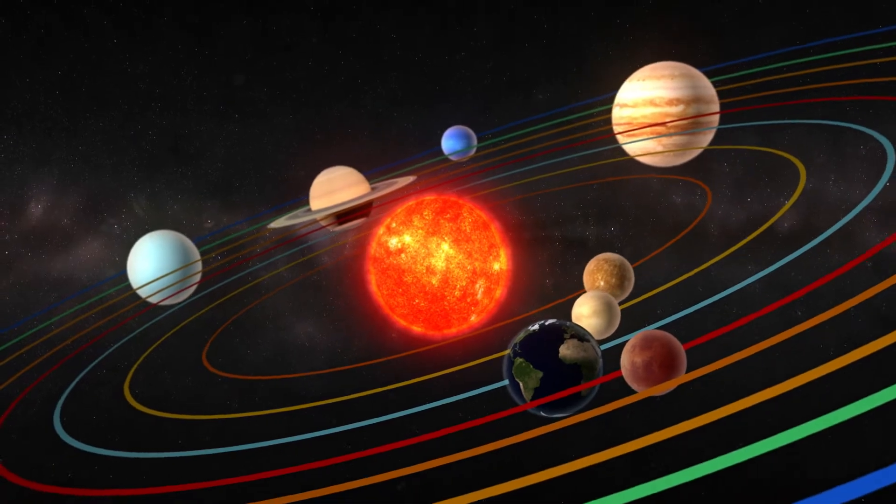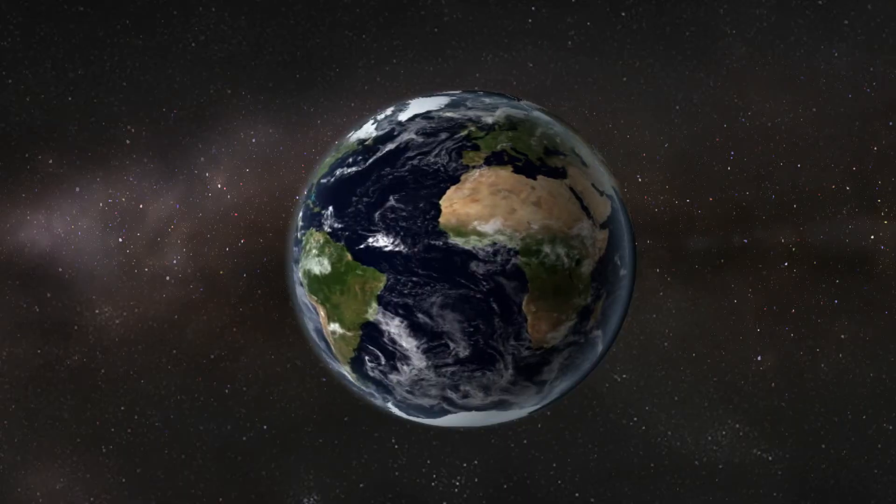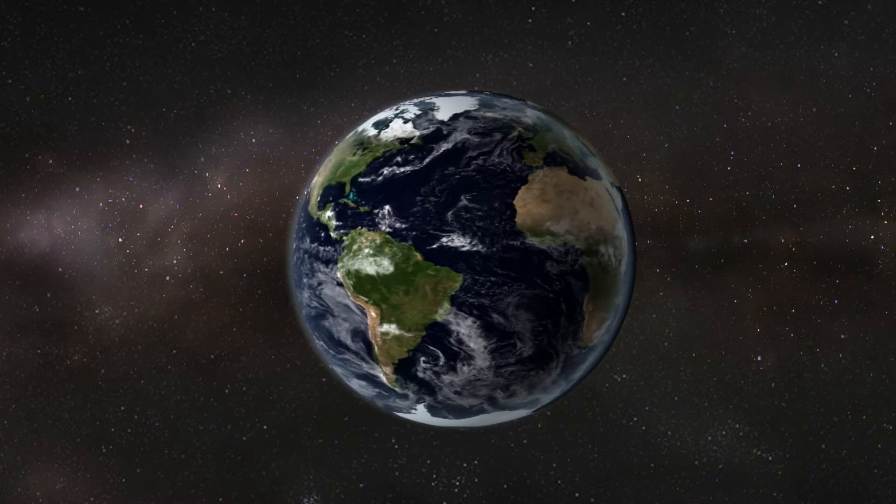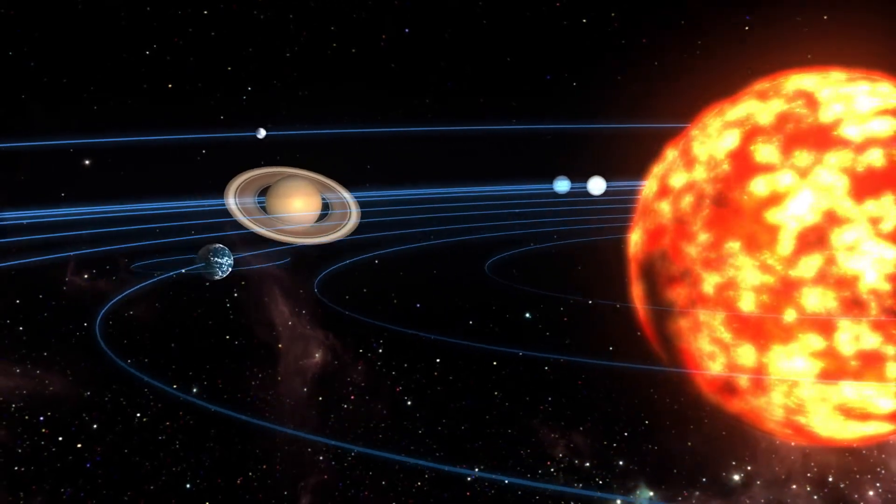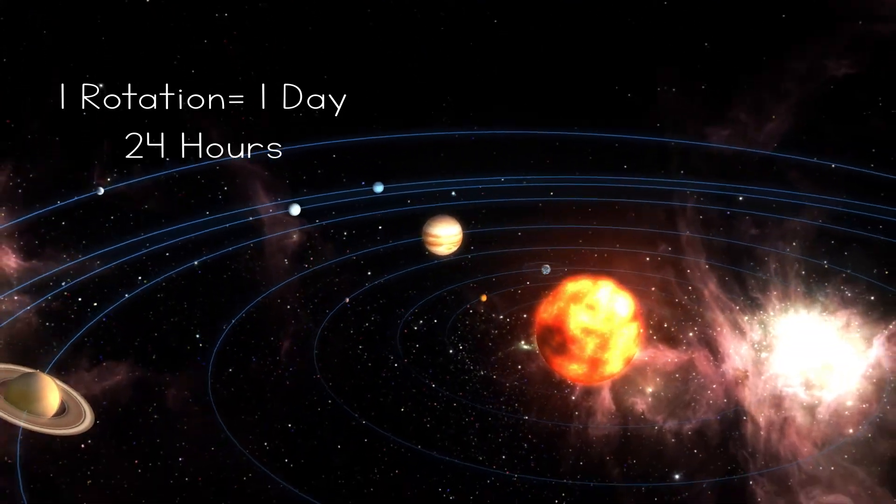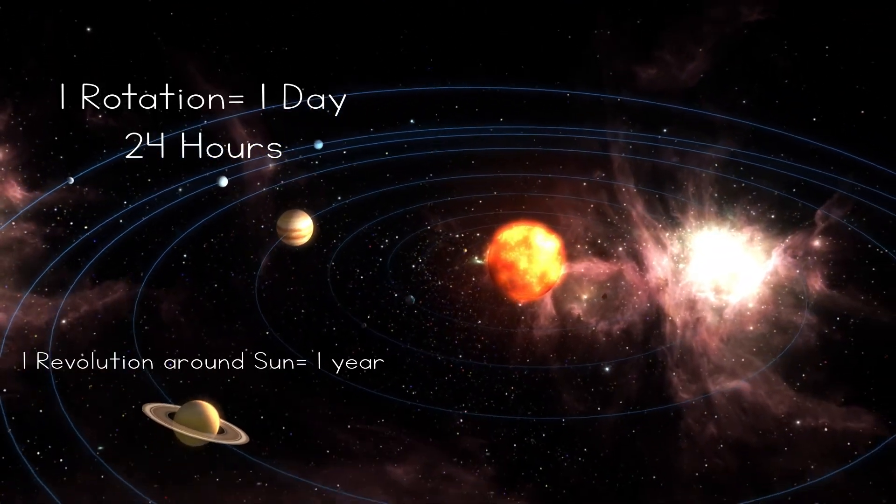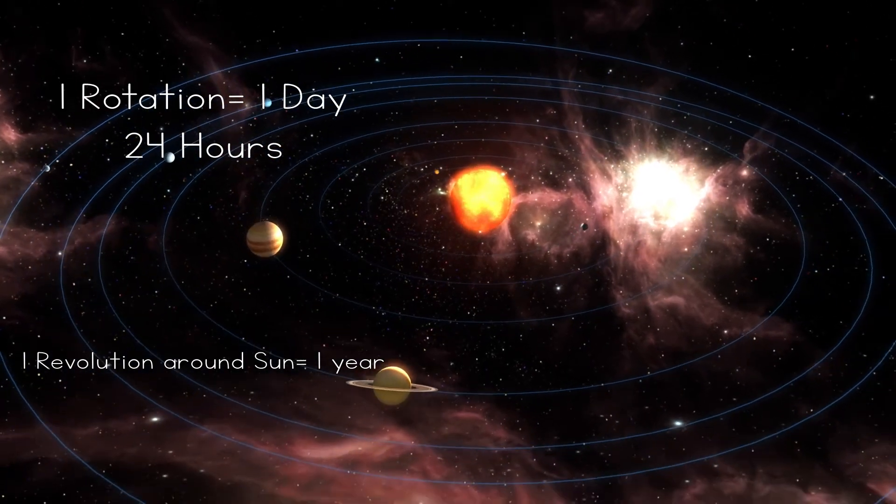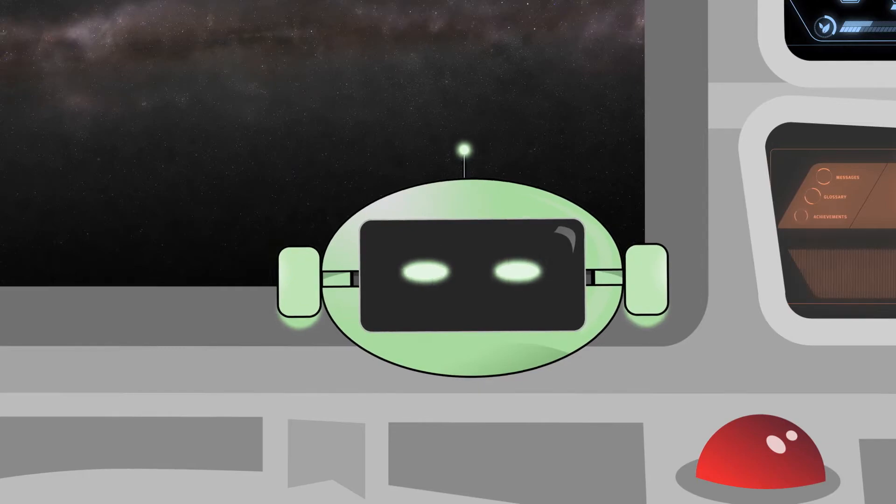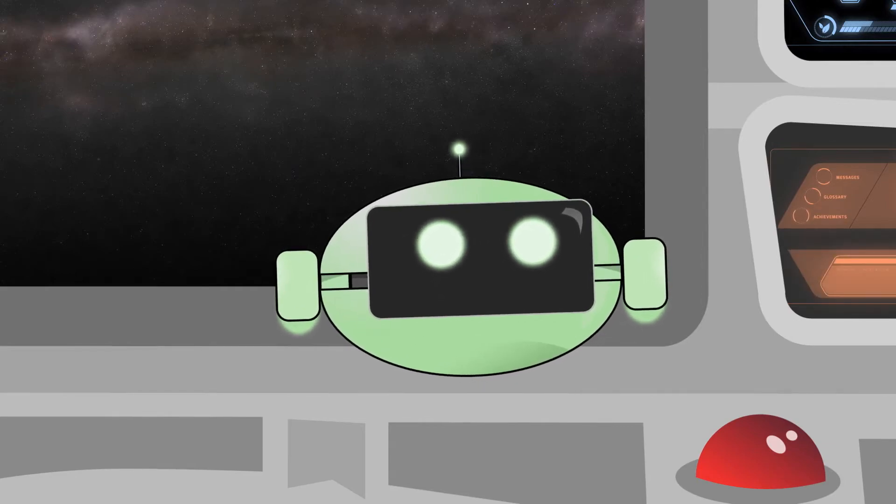As the planets are revolving, they are also rotating on their axis. So they are spinning as they move around the sun. A planet's day is how long it takes to fully rotate once. For Earth, it's 24 hours. A planet's year is how long it takes to fully revolve around the sun. For Earth, it's 365 days. So each planet has a different length day and year? Cool!